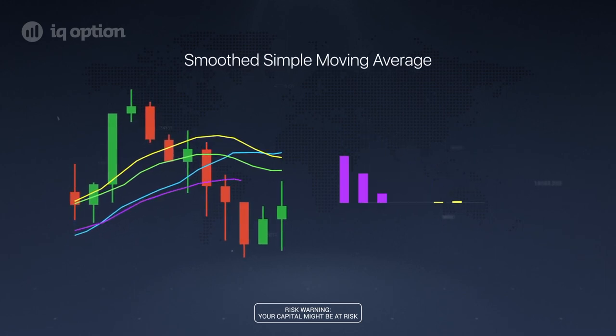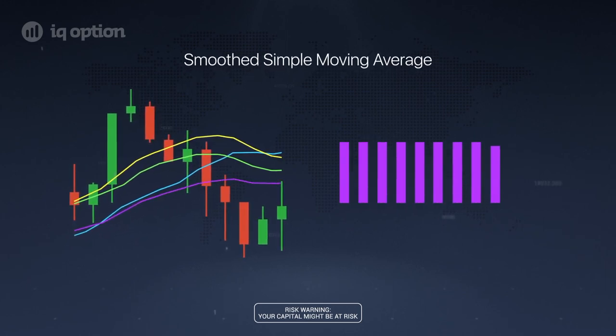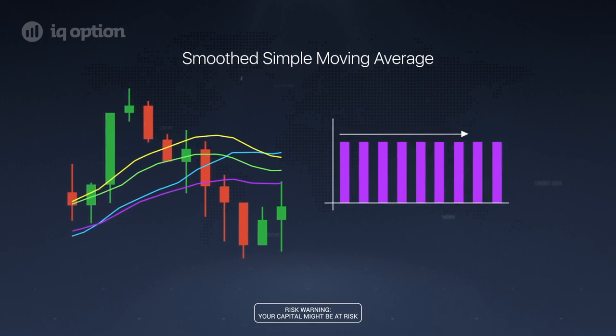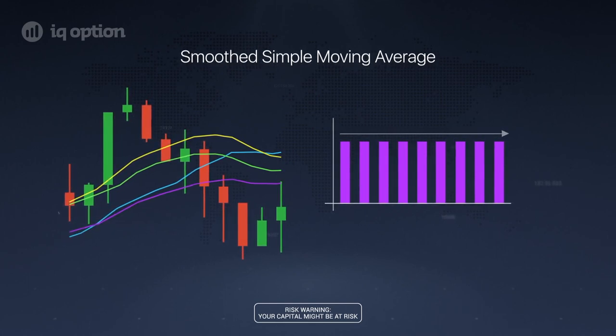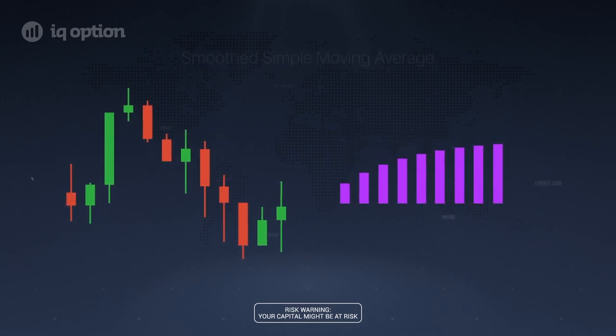The smooth simple moving average, or SSMA, takes into account a large amount of candlesticks throughout historical quotes and is much more smooth.